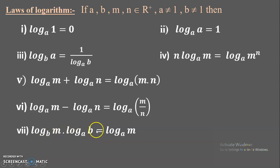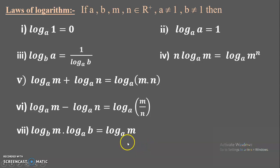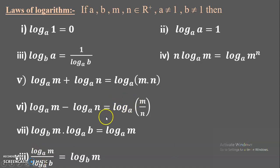The seventh rule: log m to the base b multiplied by log b to the base a — even though the bases are different, this product can be rewritten simply as log m to the base a. The eighth rule: log m to the base a divided by log b to the base a — division of two logarithms with the same base — can be rewritten as log m to the base b. All these rules can be used from LHS to RHS or RHS to LHS.